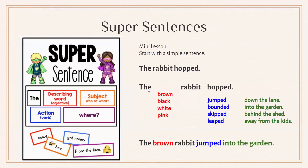Super sentences are a strategy where we take a very simple sentence and brainstorm with the whole class, a small group, or one-on-one how to embed adjectives and adverbs to make it much more interesting. For example, starting with 'The rabbit hopped' — what kind of rabbit, what color, are there other words similar to 'hopped,' where might the rabbit have hopped? Students then rewrite the sentence choosing their own words to write a super sentence. You can also set up a classroom center with word cards where kids do the same activity and write their super sentence on a sentence strip.